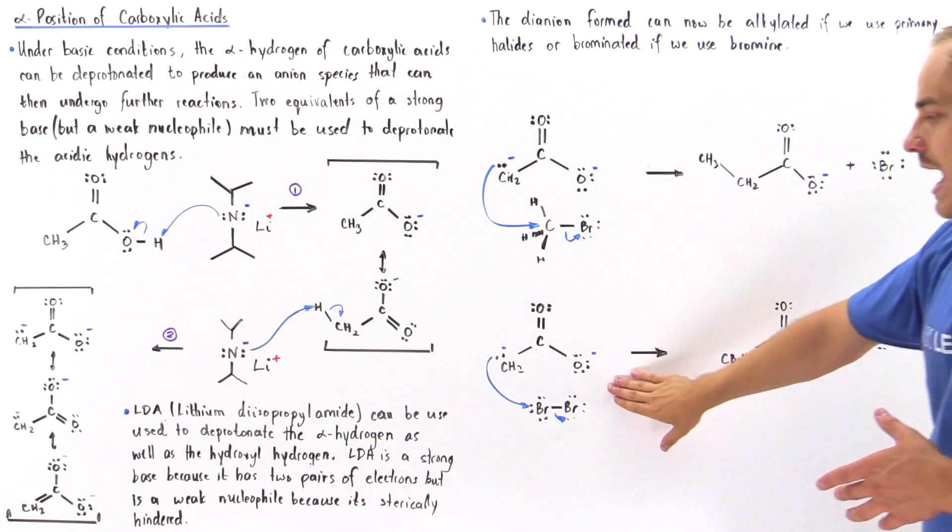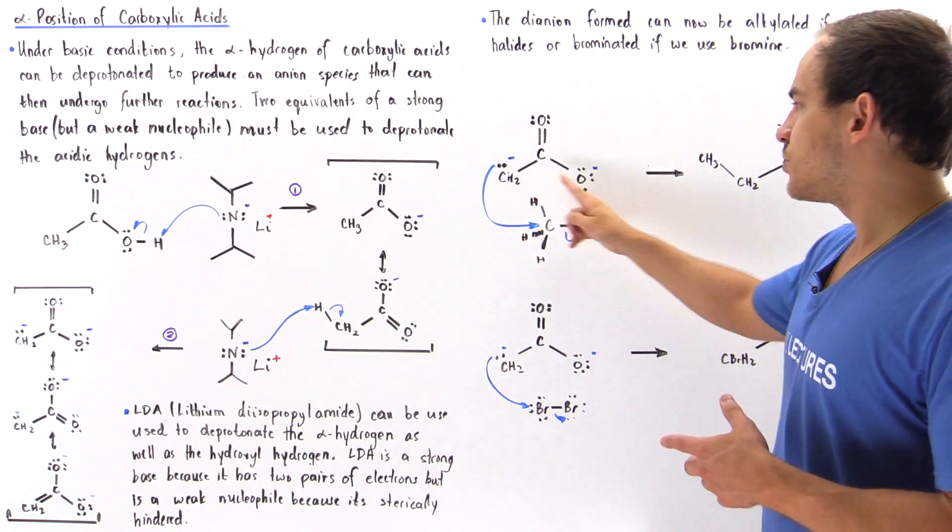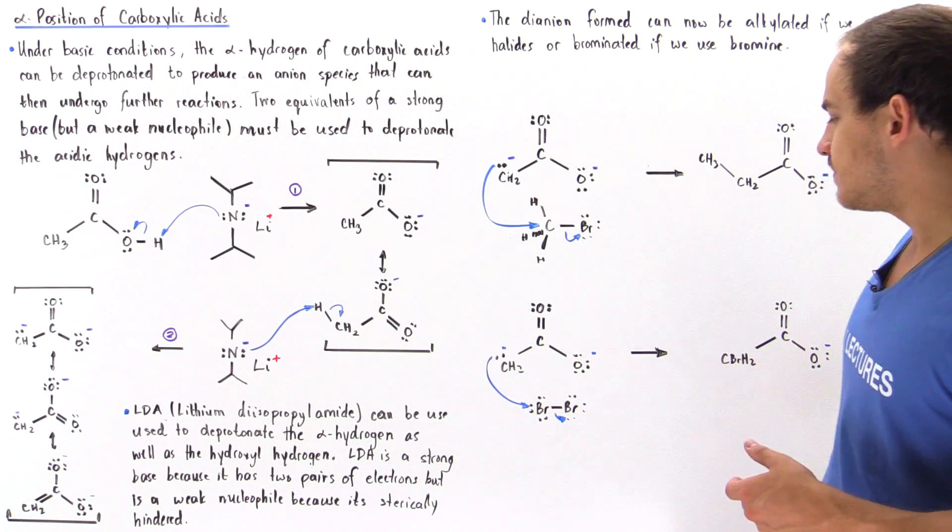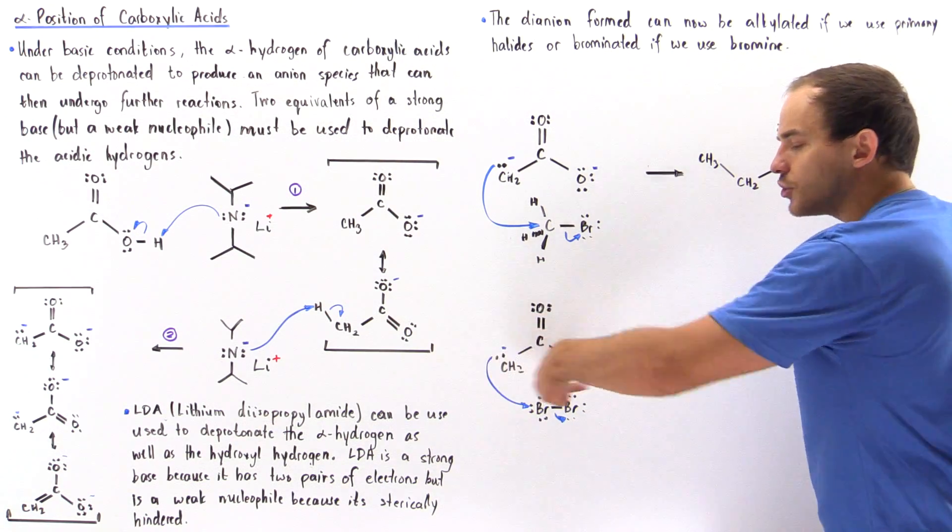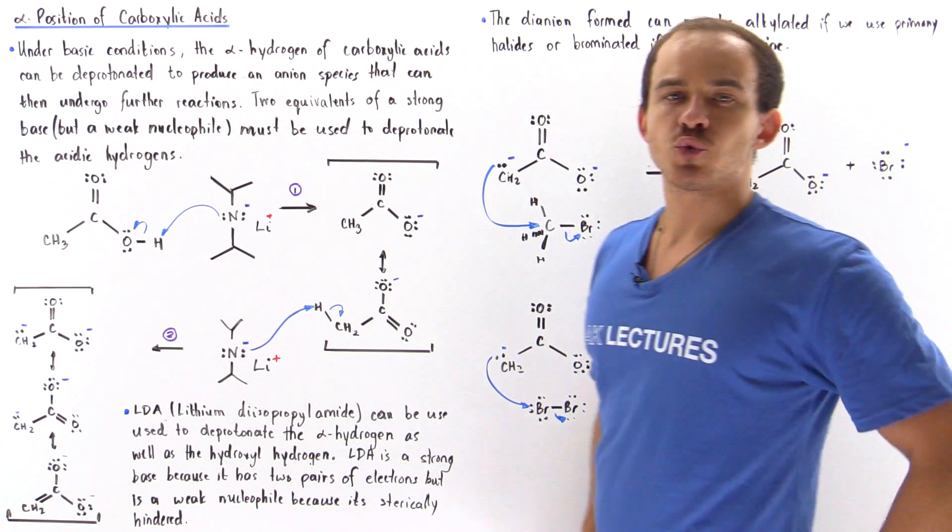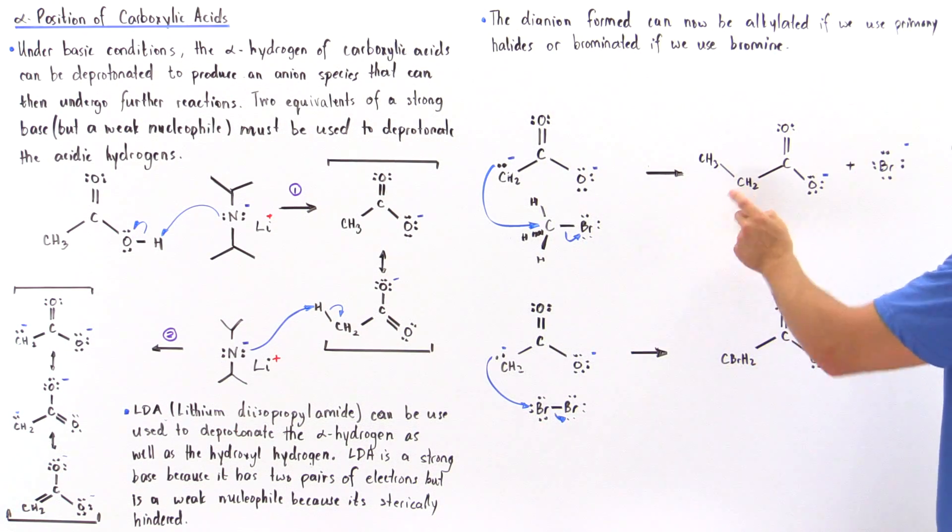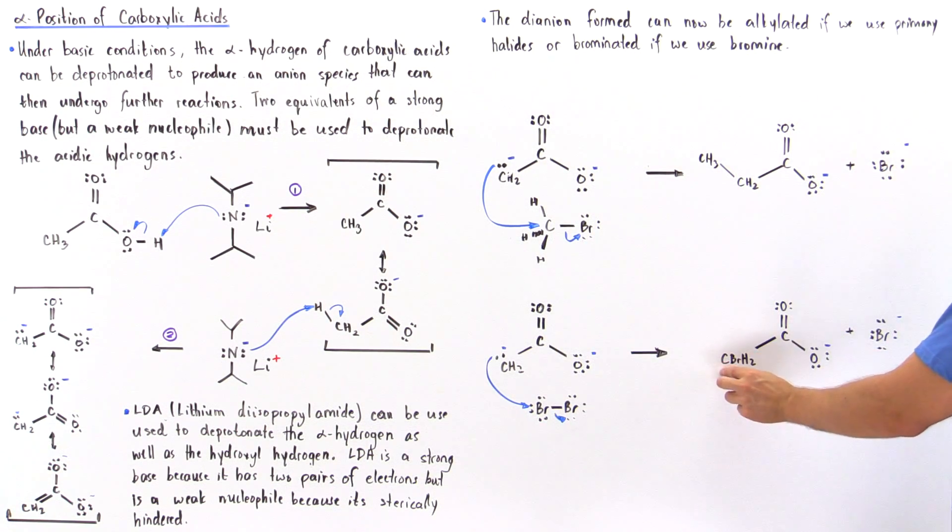Now if we, instead of reacting with the primary alkyl halide, mix it with bromine, we basically also undergo a nucleophilic SN2 reaction. And now, instead of alkylating our alpha position, we brominate this alpha carbon position.